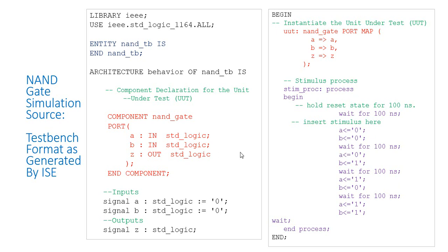The corresponding output will be represented in the waveform. Another delay has been inserted — then A=0, B=1, then A=1, B=0, then A=1, B=1 — and finally 'wait' ends the simulation step. This is the end of the architecture.